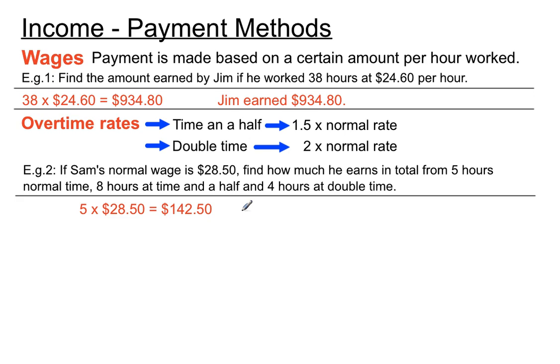Now the second bit, we've got eight hours at time and a half. Now we set up here that time and a half should be 1.5 times the normal rate. So 1.5 times what we'd normally do for that, eight hours times $28.50. So that special thing I've put in blue there is the adjustment for being time and a half for those eight hours. And we'll get that calculated.